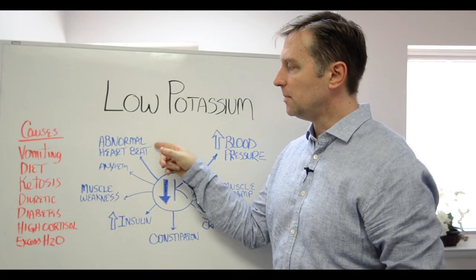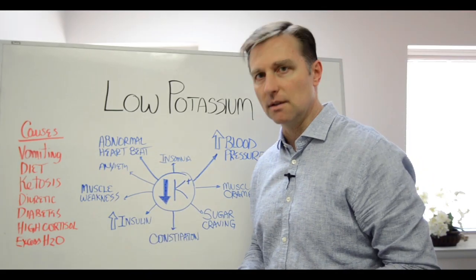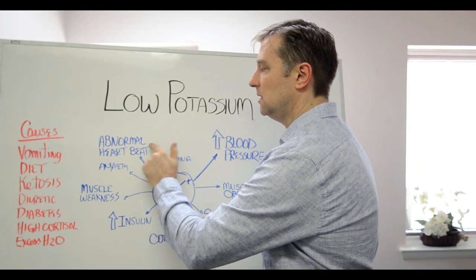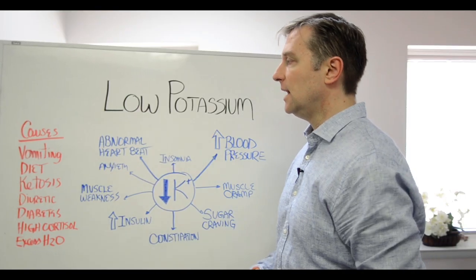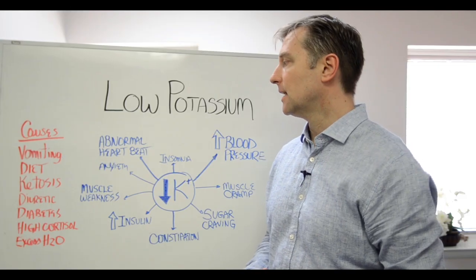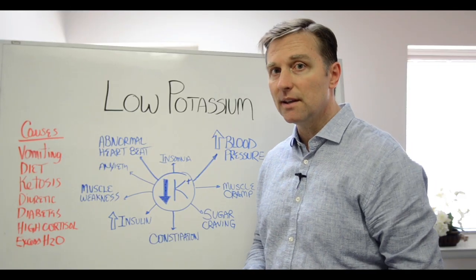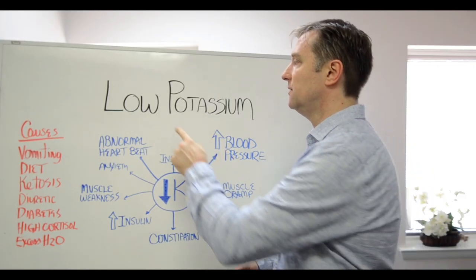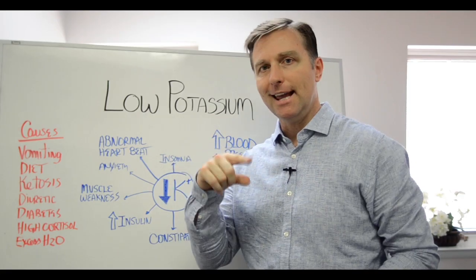And that's why you have abnormal heartbeat, because the heart is a muscle. These abnormal heartbeats, for example, like atrial fibrillation, arrhythmias, that's a combination of deficiency of potassium and or magnesium.